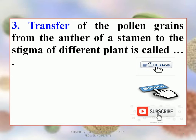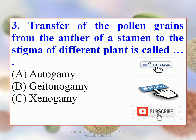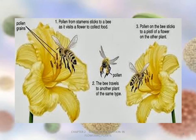Third MCQ: Transfer of the pollen grains from the anther of a stamen to the stigma of a different plant is called dash. Options: A. Autogamy, B. Geitonogamy, C. Xenogamy, D. A and B Both. The correct option is C. Xenogamy. As shown in the figure, pollen grains from the stamen stick to a bee as it visits a flower to collect food. The bee then travels to another plant of the same type and transfers the pollen grains to the stigma of that plant.